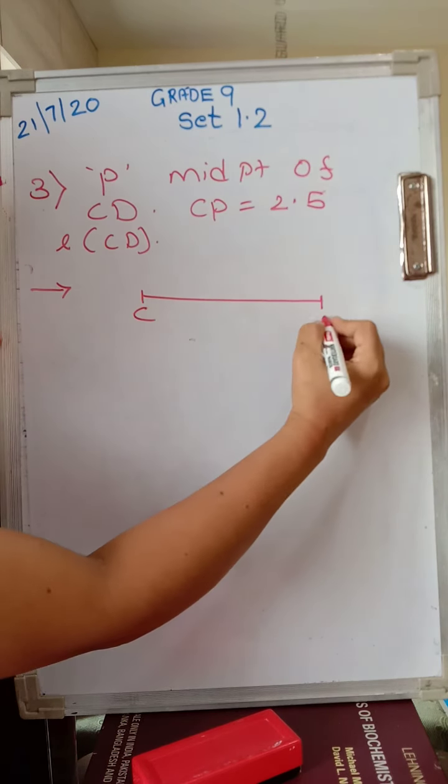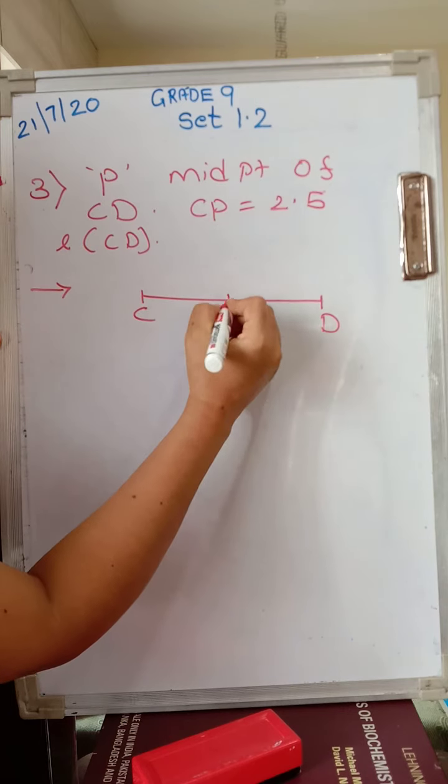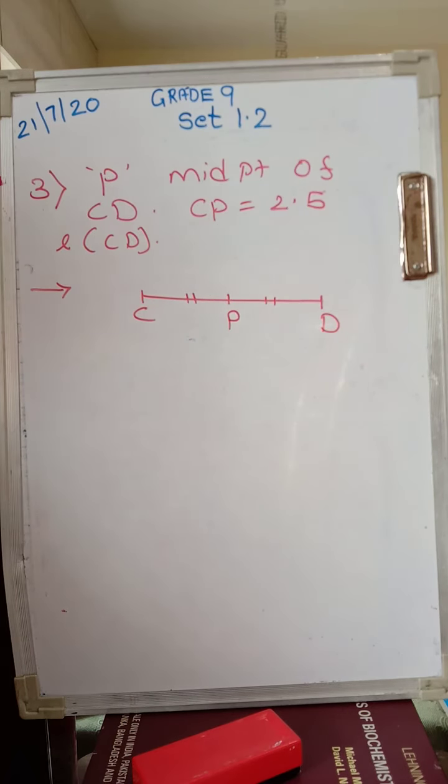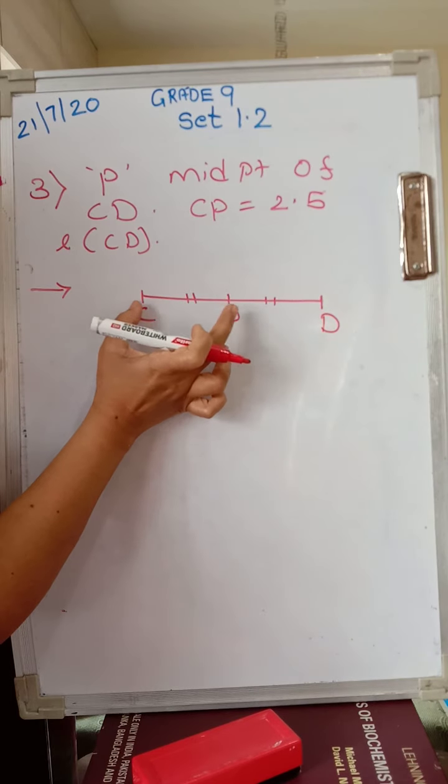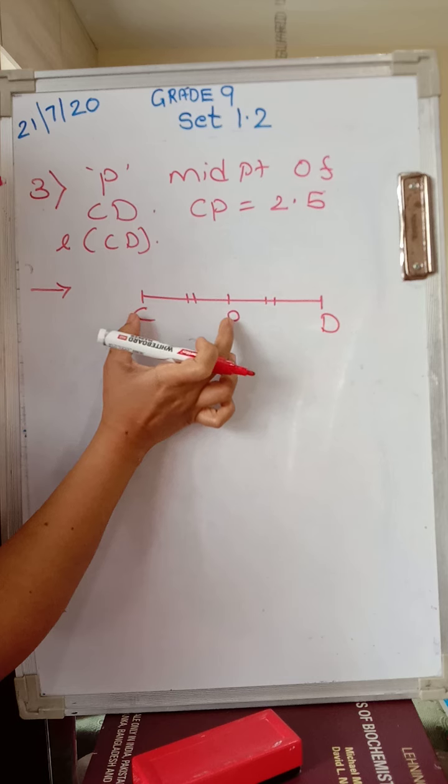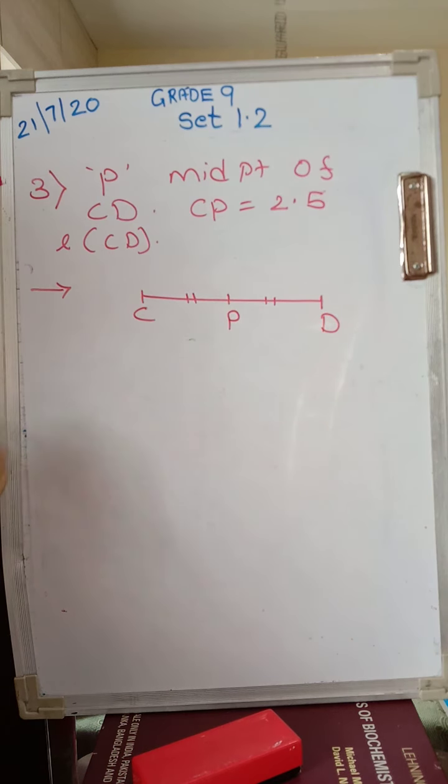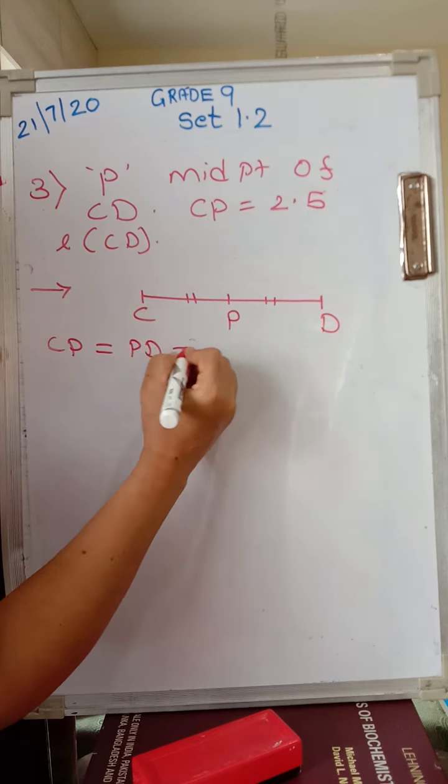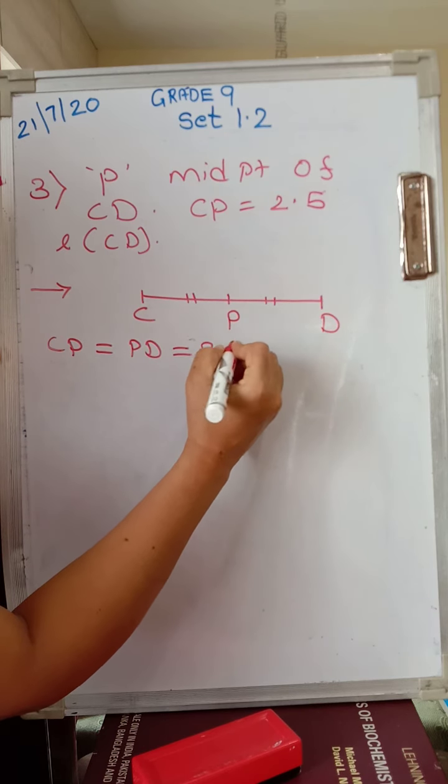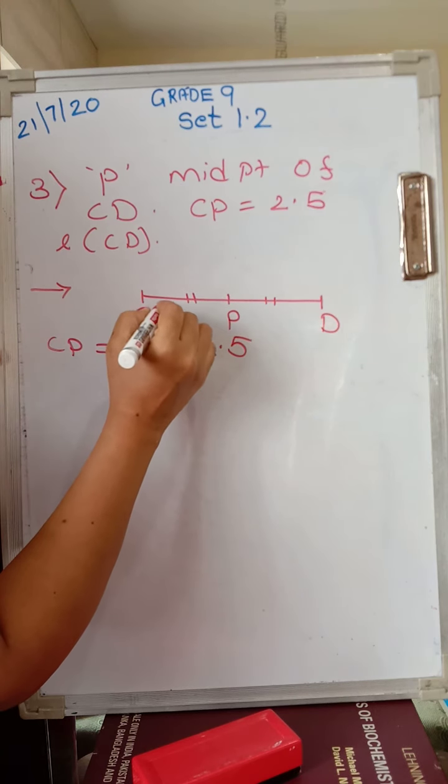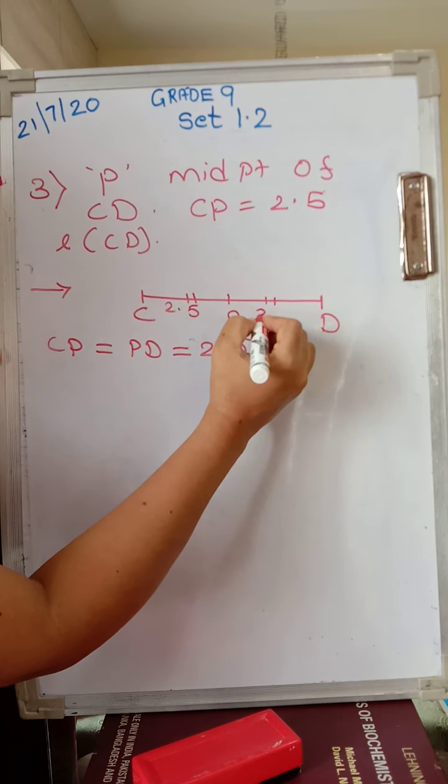Now see, segment is C to D. Who is the midpoint? P is the midpoint. So immediately make these notations. Now what does this indicate? CP plus PD will be equal to CD, and also CP is equal to PD. So we can write CP equals PD equals 2.5. Because CP is given as 2.5, this is also 2.5 and this is also 2.5.